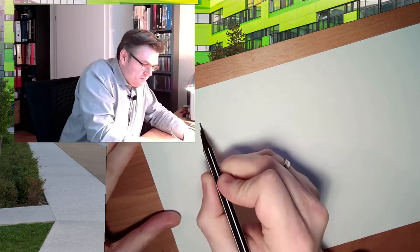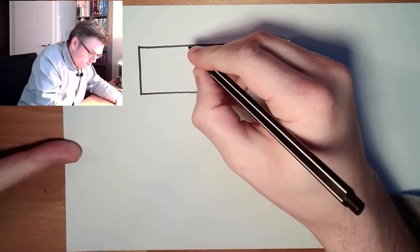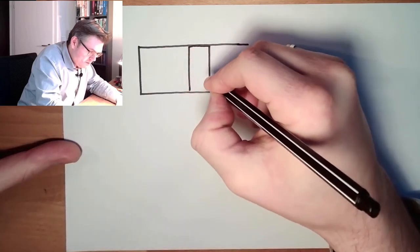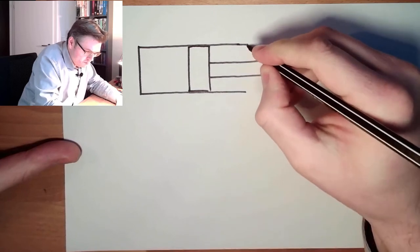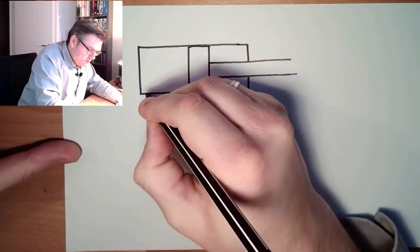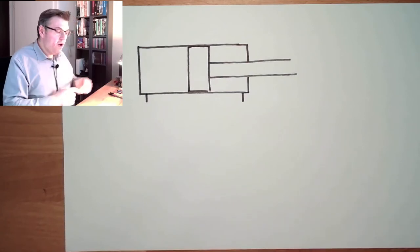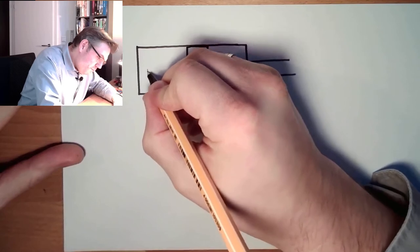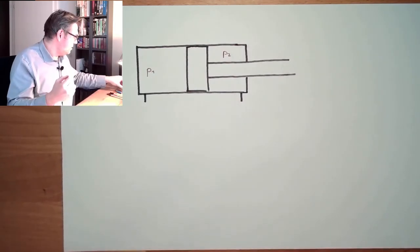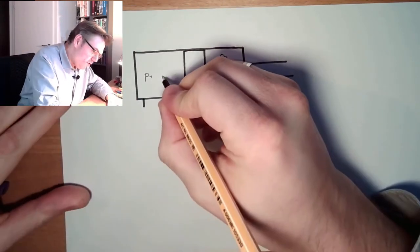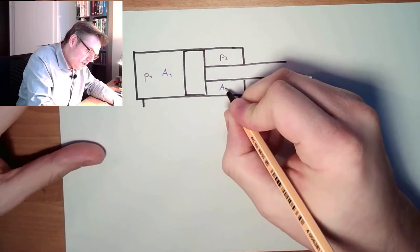Let's draw a double-acting cylinder. There's the piston, the rod, and connectors. So we do have liquid on both sides. Here we have pressure one, here we have pressure two. We also have two different areas: this area — area one — is a full circle, and area two here on the rod side is only a ring, not a full circle.